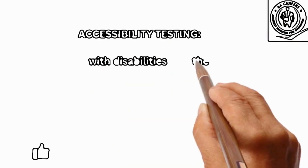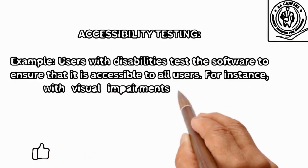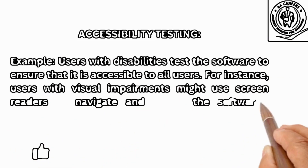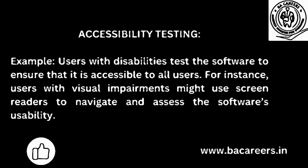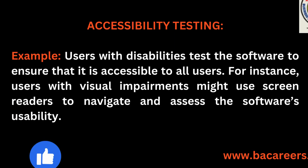Accessibility testing: Users with disabilities test the software to ensure that it is accessible to all users. For instance, users with visual impairments might use screen readers to navigate and assess the software's usability.